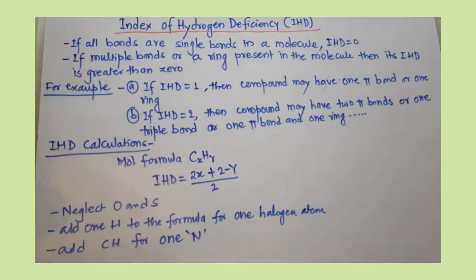This is the part we are going to discuss here. As I mentioned earlier, IHD calculations are important while deciding the structure of an organic molecule from the given spectral data. To decide the IHD, we must know the molecular formula for the molecule.